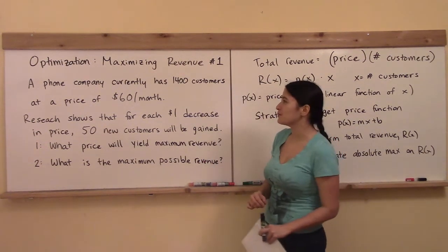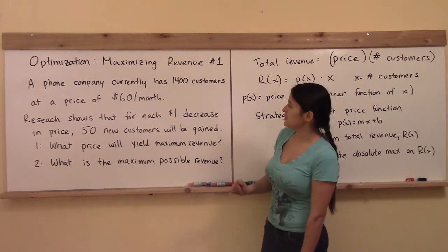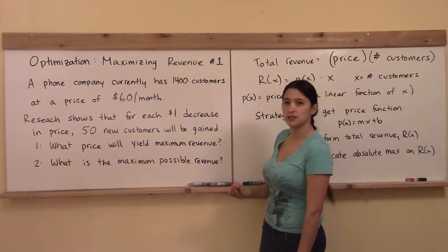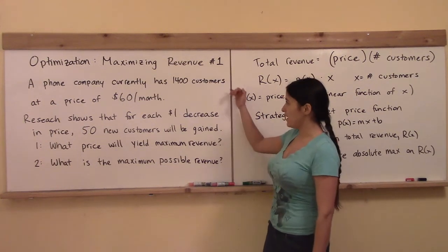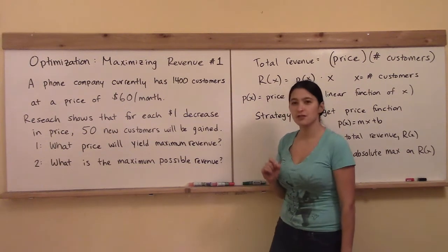So this is a word problem. A phone company currently has 1,400 customers at a price of $60 per month.